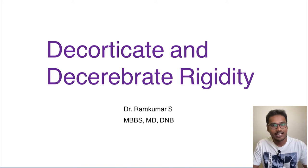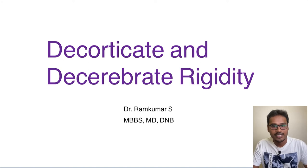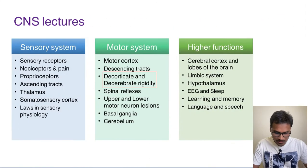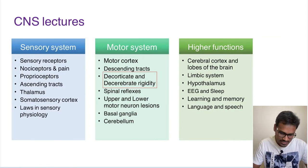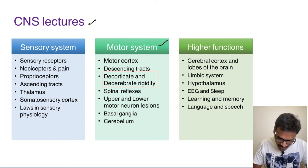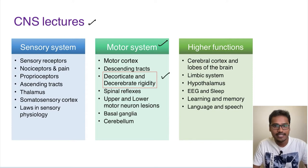It is also a little confusing, but we will try to make it easier. Since we have already studied our descending tracts, it is pretty much easy to understand. I would suggest all of you to watch the descending tracks video and come back to this video. So coming to the topic, we are discussing our CNS lecture on the motor system, specifically decorticate and decerebrate rigidity.